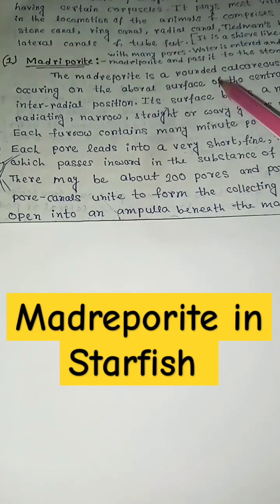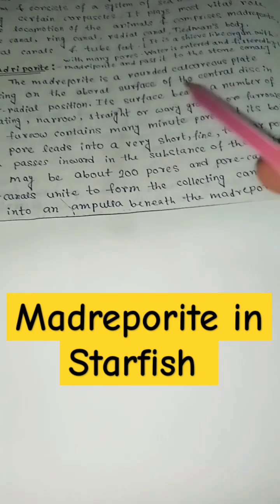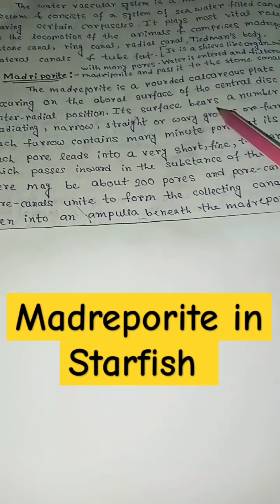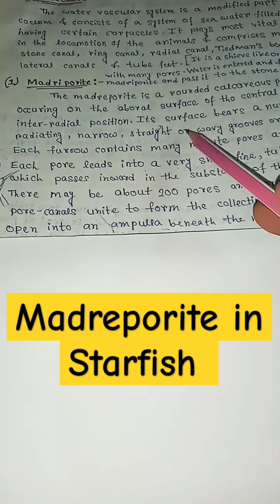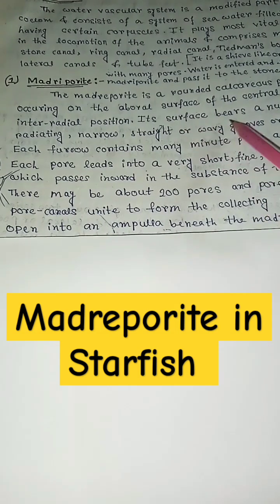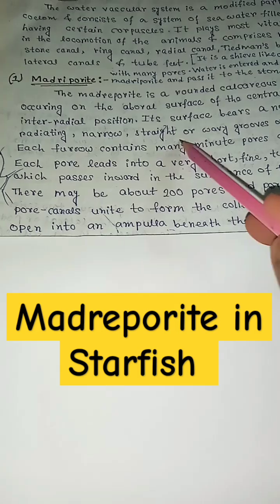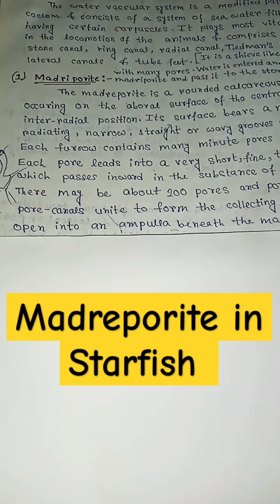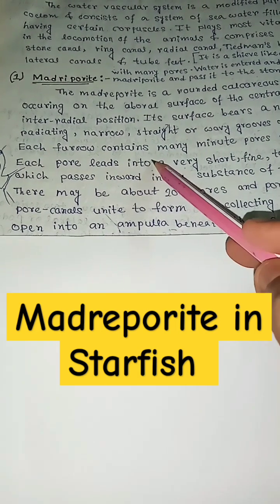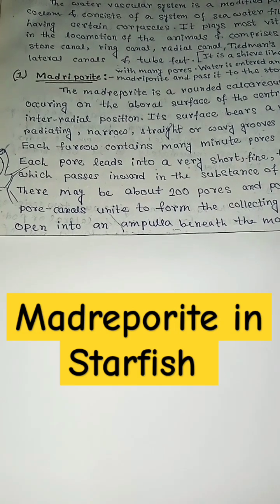What is medripodite? The medripodite is a rounded calcareous plate occurring on the aboral surface of the central disk in interradial position. Its surface bears a number of radiating narrow straight or wavy grooves or furrows. Each furrow contains many minute pores at its bottom.